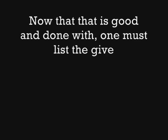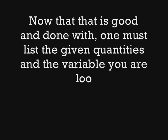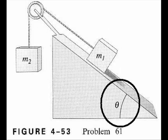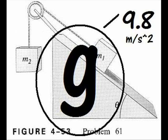Now that that is done with, one must list the given quantities and the variable you are looking for. According to the problem, we must find the acceleration formula in terms of M1, M2, theta, and g. We know g is 9.8 and that is the only numerical number given. Everything else we use to create the formula for acceleration.